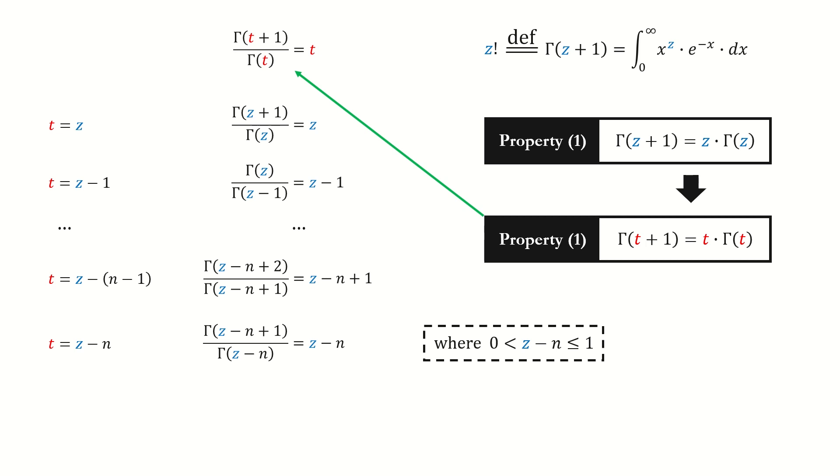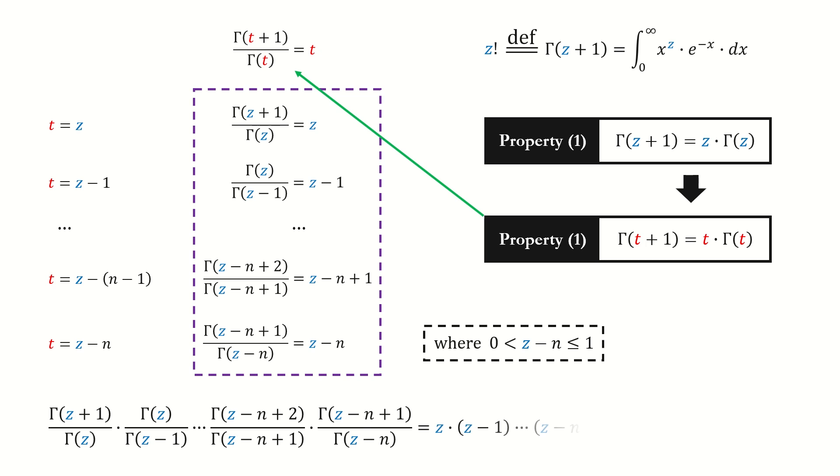Note here, we stop this process when z minus n is between 0 and 1. Then we multiply them together. The diagonal terms cancel out.